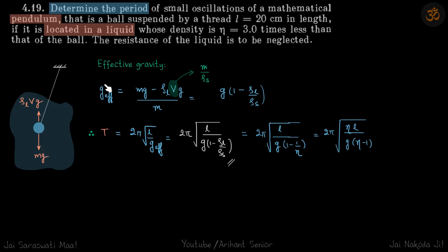We can write the effective gravity downwards as: downward force mg minus upward force ρ_L v g divided by mass. So this is g effective which gives g(1 - ρ_L/ρ_s) because volume is mass upon density of the solid.